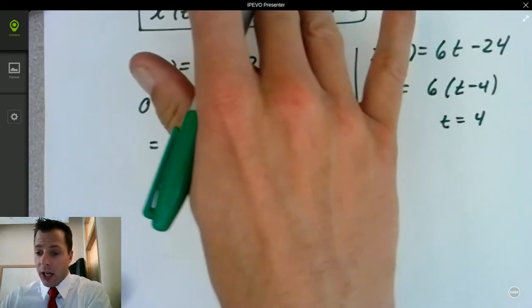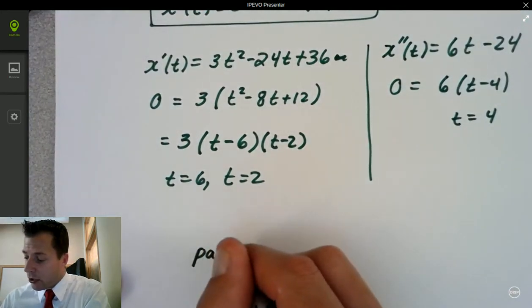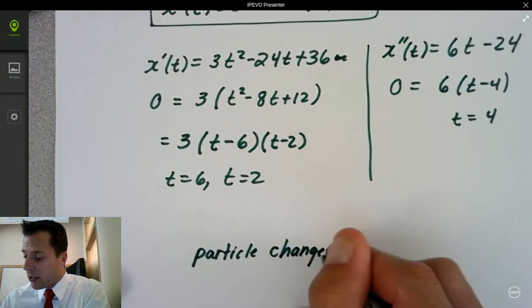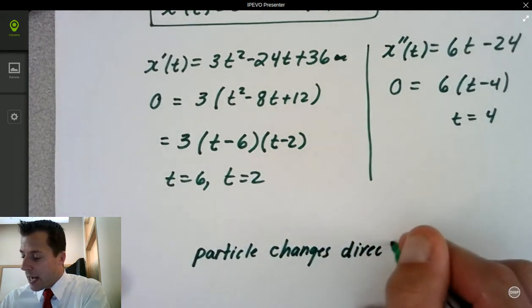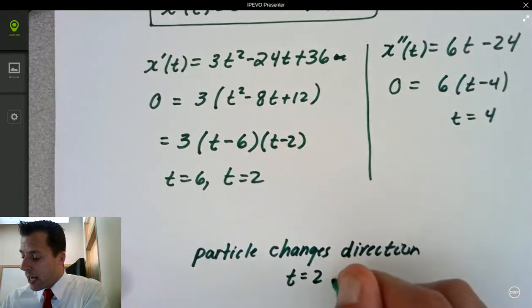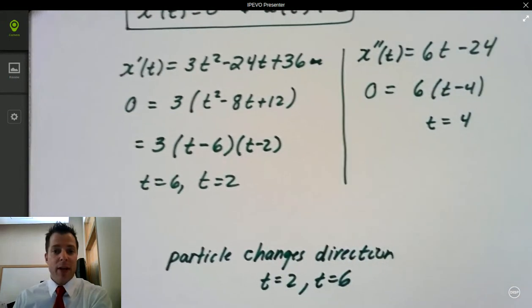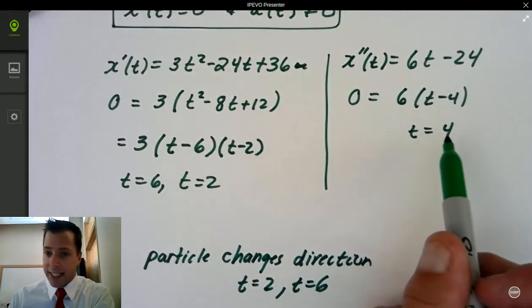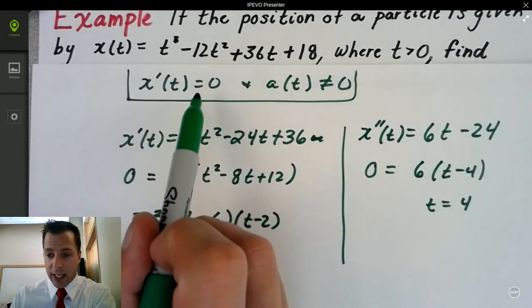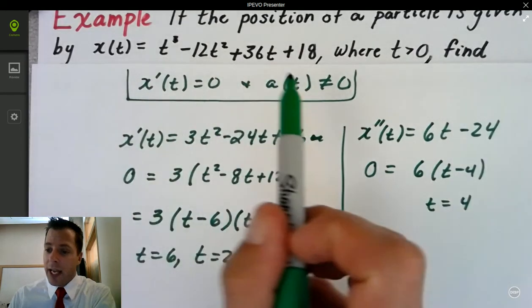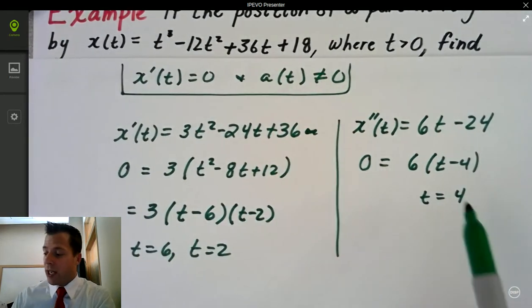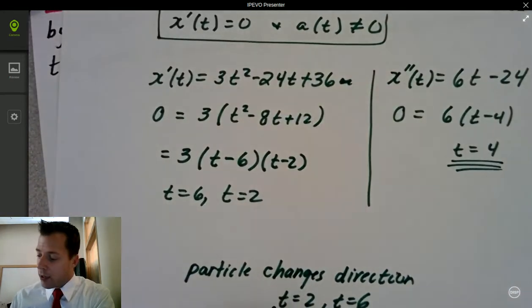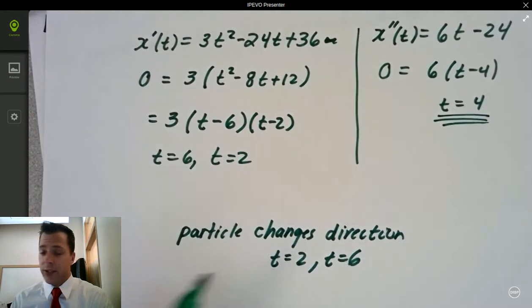So in conclusion, the particle changes direction at t equals 2 and t equals 6, both of them. Because the only spot where the acceleration is 0 is at t equals 4. When the velocity is 0 and a of t is something other than 0, you're changing direction. So both particles are changing direction at both those times.